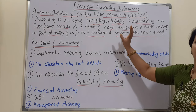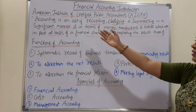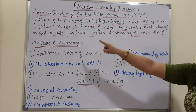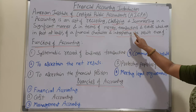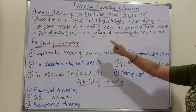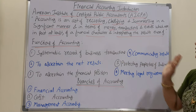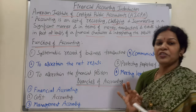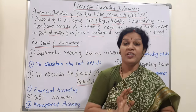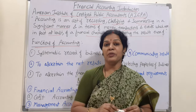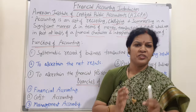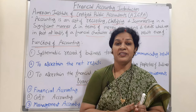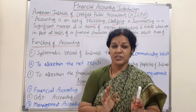So this definition tells you exactly what financial accounting is. In simple terms: accounting is an art of recording, classifying, and summarizing in a significant manner and in terms of money, transactions and events which are at least in part of a financial character, and interpreting the results thereof. All transactions are put in a recording way, then classified and summarized as per the required manner — this is financial accounting.